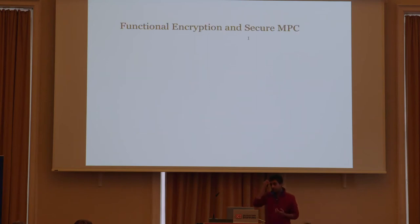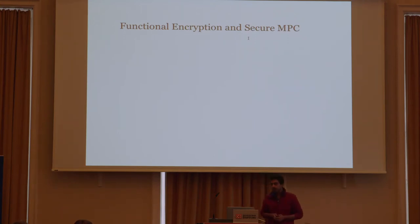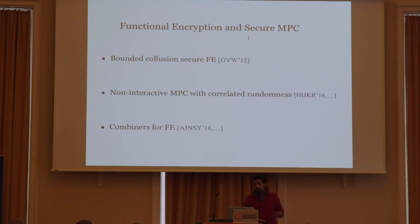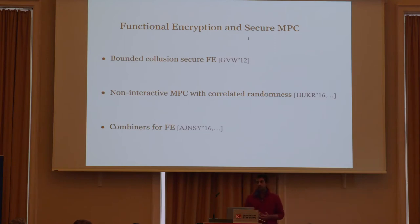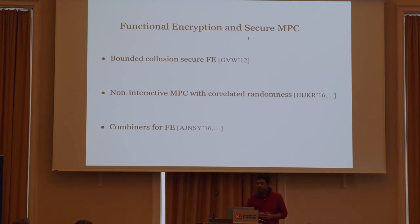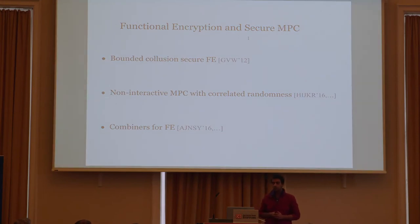The goal of both talks is to explore the techniques at the intersection between these two notions. There have already been some works studying this intersection. In 2012, GVW showed how to construct bounded collision secure function encryption schemes starting with the honest majority MPC protocol of BGW. A few years back, there was also a construction of non-interactive MPC in the reusable correlated randomness model from multi-input function encryption. And recently, we saw how to construct combiners for function encryption using two-round MPC protocols.